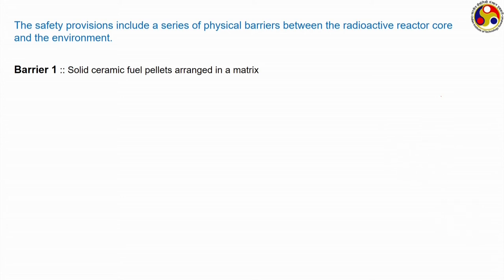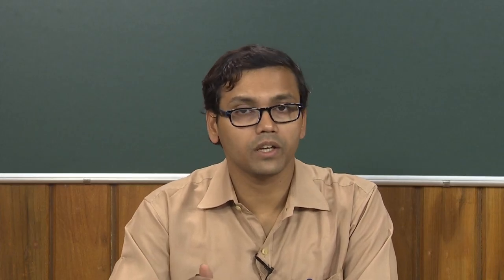The second barrier is the cladding — the jacket around the fuel. One key function of cladding is to prevent the release of radioactive fission products to the coolant stream. Cladding can be made of Zircaloy, Magnox, or in certain situations stainless steel. Being strong and generally non-permeable metallic sheets, they efficiently prevent leakage of fission fragments.